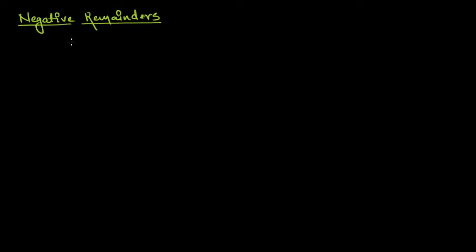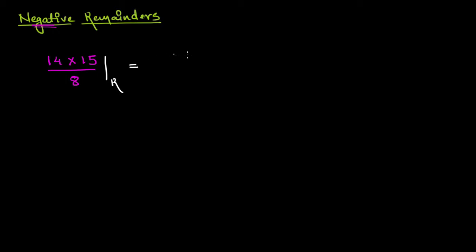Let me now introduce you to the concept of negative remainders. Let us start with a simple example. Let's say if I have 14 multiplied by 15 and I divide this by 8, we are asked to find the remainder. The simple and foremost approach will be to divide individual numbers by 8, find the remainders, and then multiply them.